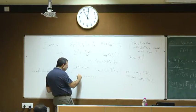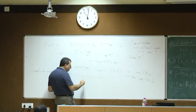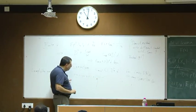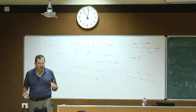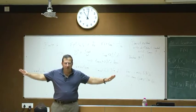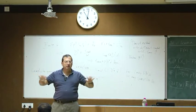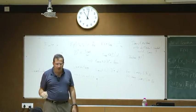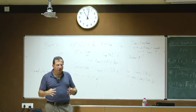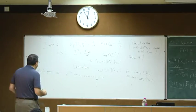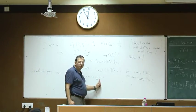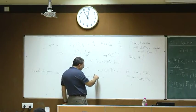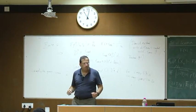The lamplighter group over Z is an infinite group. An element looks as follows: on the integers, we have lamps that are on or off — on is indicated by 1 and off by 0 — with only finitely many on. We also have a marker or lamplighter at some integer point. An element consists of a finitely supported vector of zeros and ones and a marker pointing to a specific integer.